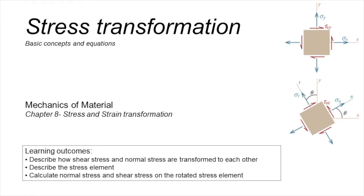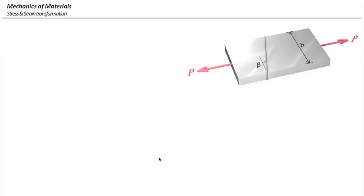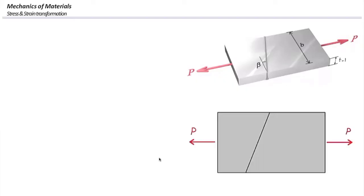In the first video we learned about the importance of stress transformation, and here we derive the equations that we are going to use for stress transformation. Consider a plate made up by welding two plates as shown in this figure. This plate is subjected to an axial force p, and we want to determine the state of stress at different points in this structure.